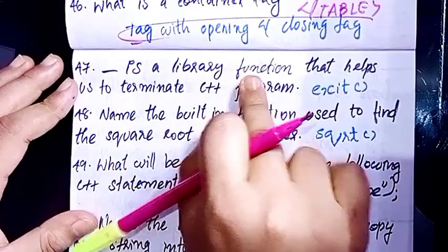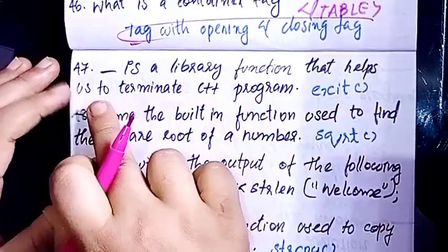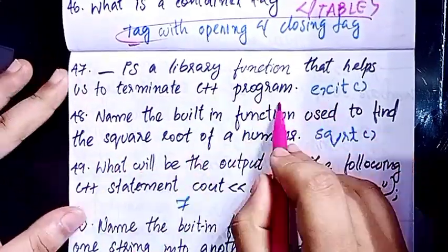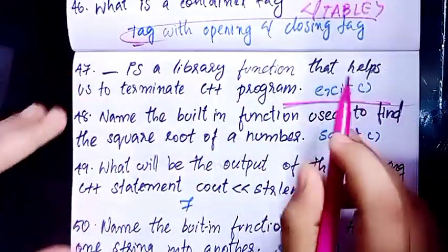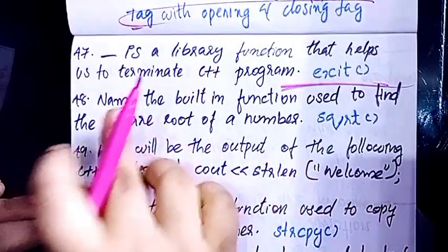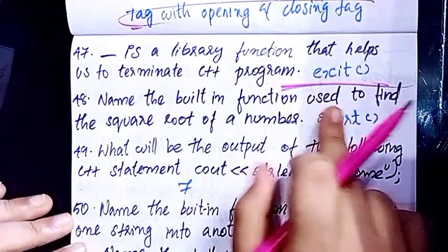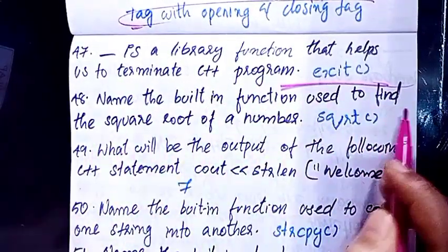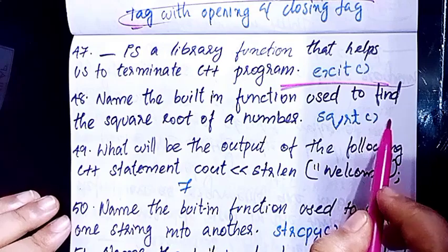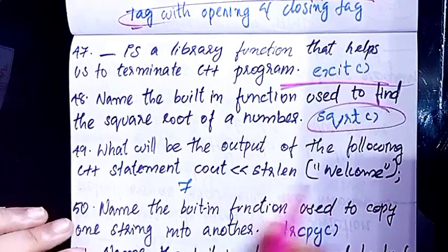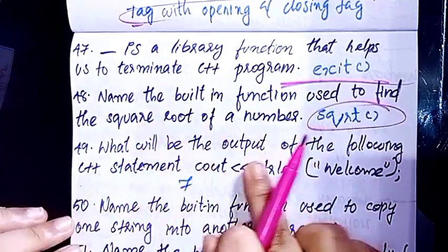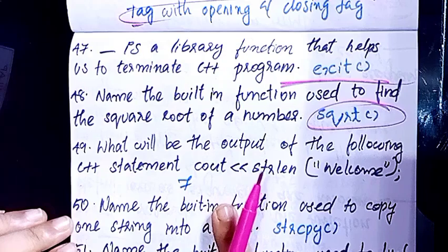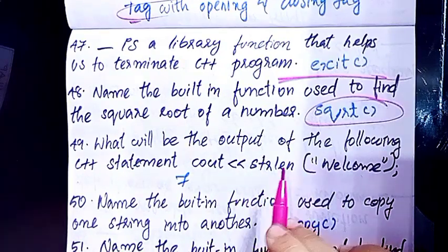Dash is a library function that helps us to terminate C++ — that is exit(). The built-in function used to find the square root of a number is sqrt().